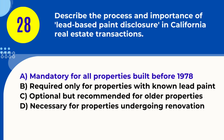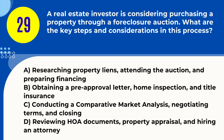Question 29. A real estate investor is considering purchasing a property through a foreclosure auction. What are the key steps and considerations in this process? A. Researching property liens, attending the auction, and preparing financing B. Obtaining a pre-approval letter, home inspection, and title insurance C. Conducting a comparative market analysis, negotiating terms, and closing D. Reviewing HOA documents, property appraisal, and hiring an attorney. Answer: A. Researching property liens, attending the auction, and preparing financing. Explanation: Buying a property through a foreclosure auction involves researching liens, attending the auction, and having financing ready.